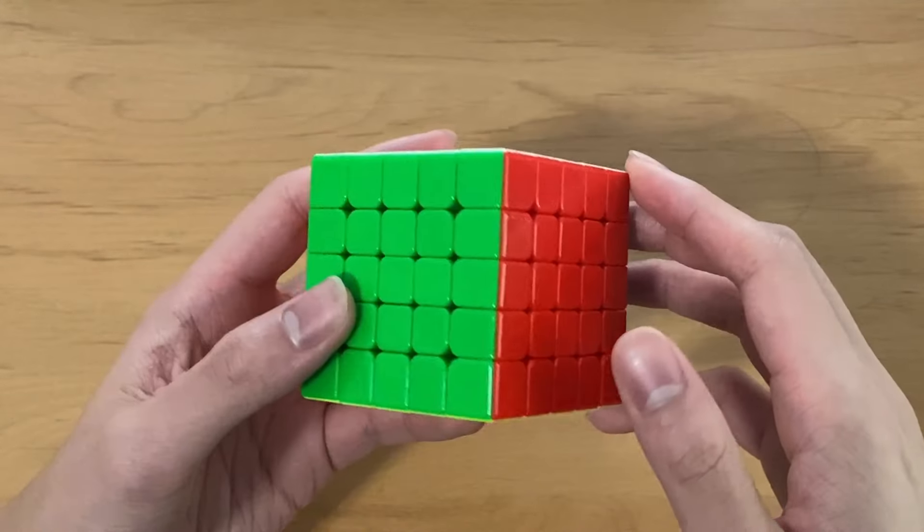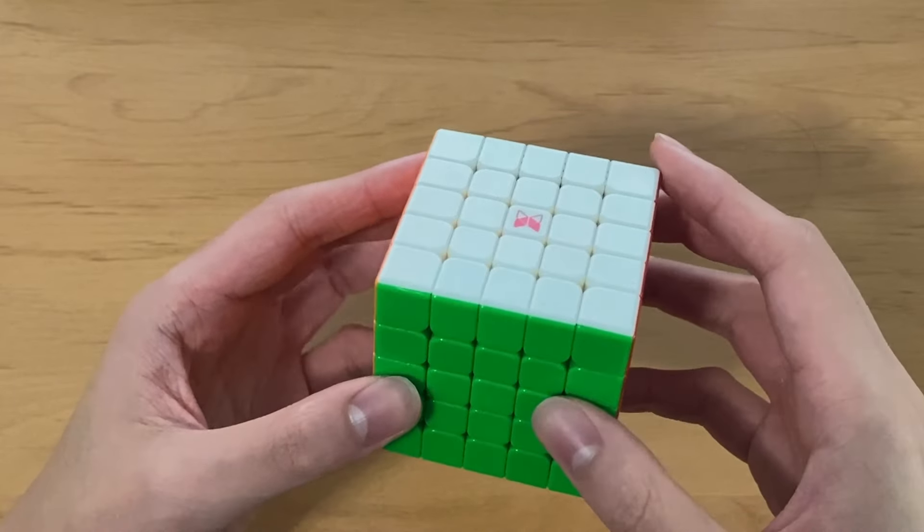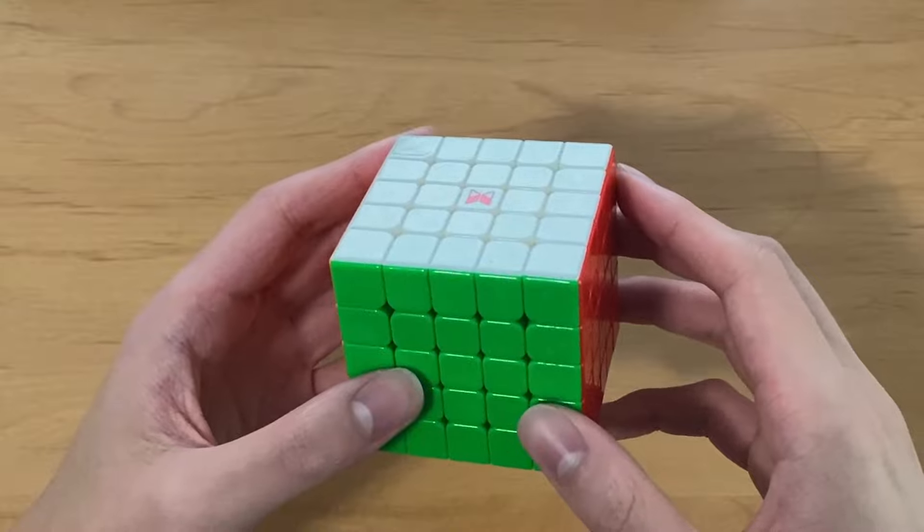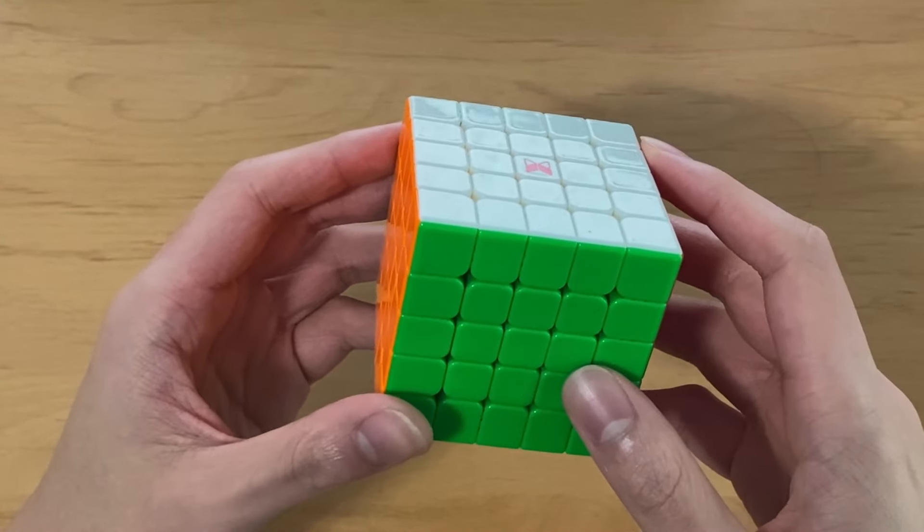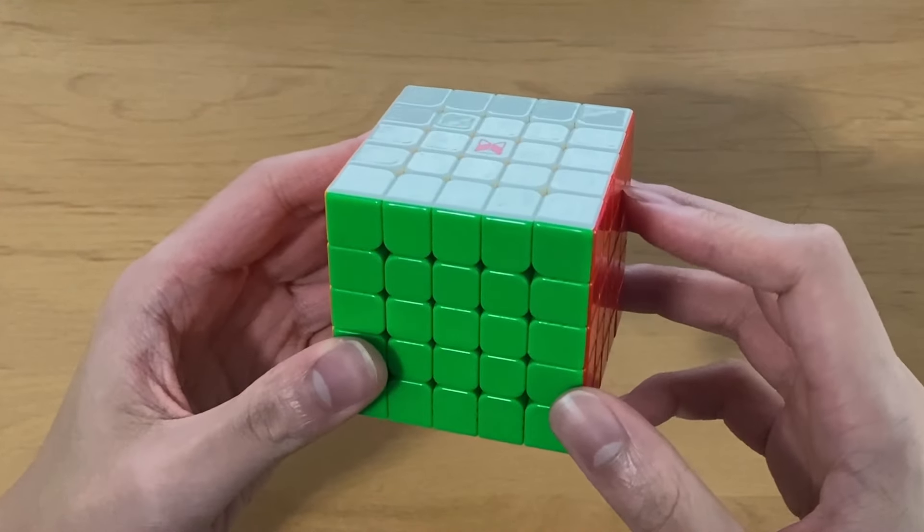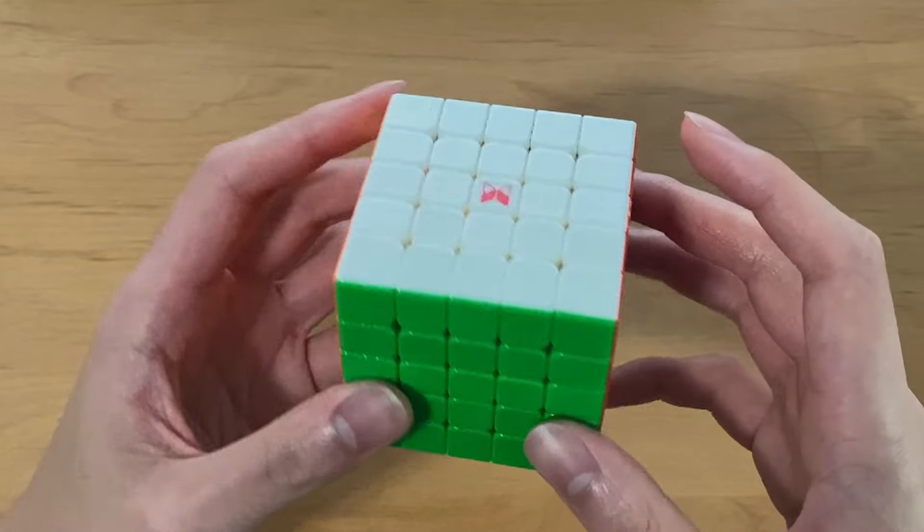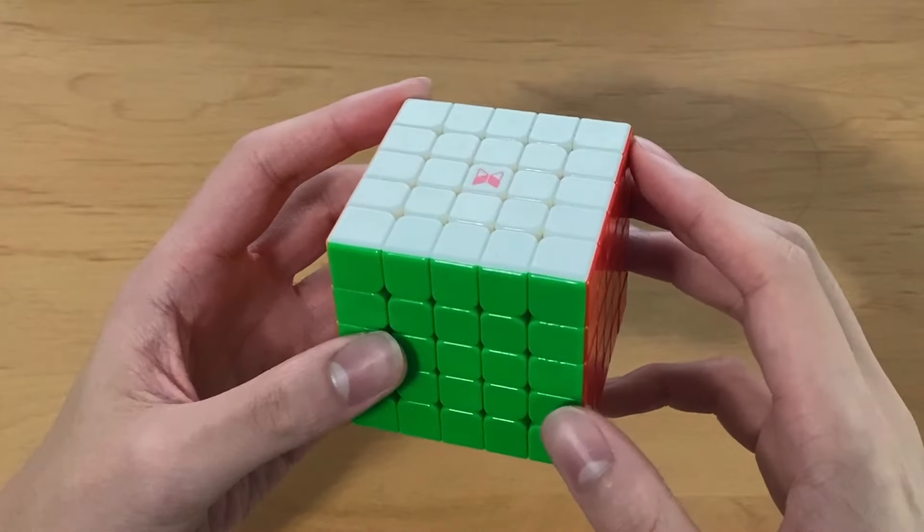It's very stable, it has a ball core, and you can get some really nice turning on it. It's pretty fun to solve on, and I think it has a good balance between speed and stability. I used this cube to drop my official PR single from a 56 to a 49, and my PR average from a 102 to a 58. So this cube is extremely good and it works very well in competition.